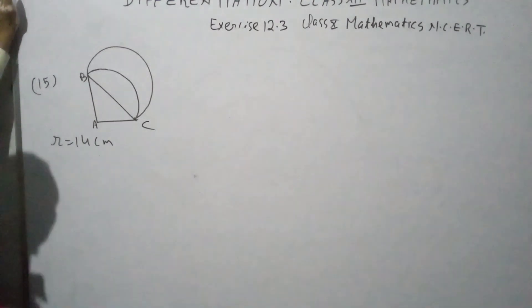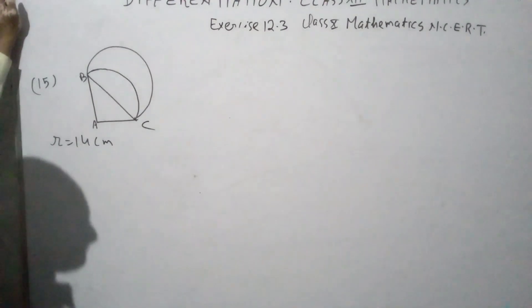ABC is a quadrant and a semicircle is drawn taking BC as the diameter, so find the area of the shaded region.